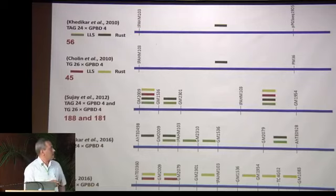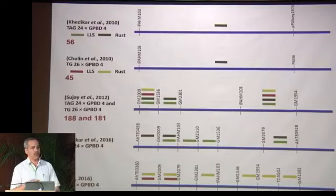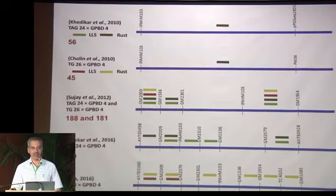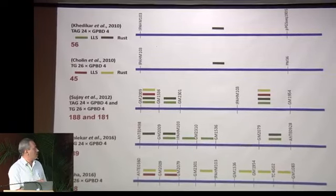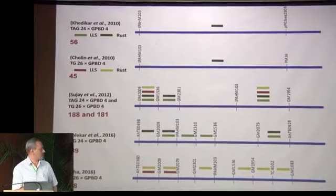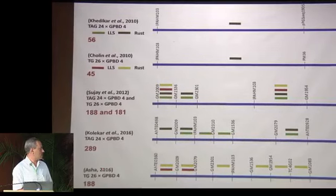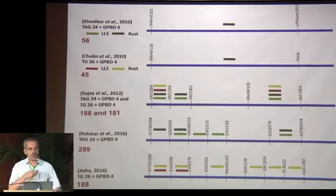When we started the work in 2010, there were only two markers in a specific region on the A03 chromosome — the region that harbors the QTL for LLS resistance and rust resistance. Over the years, that same region was enriched — we call it marker saturation. In 2010 there were two markers across two populations; in 2012 we added another three markers; in 2016 we added more; and in 2017 we included TE markers. That's how the region got saturated to handle those QTLs better.